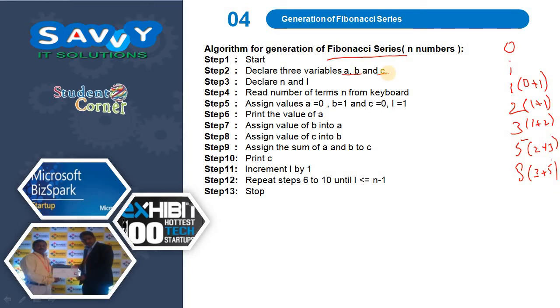For that, we are writing the code. Declare the variables a, b and c, additionally we are taking n and i. Up to 1, 2, 3, 4, 5, 6, 7. I will give n equals 7, then it prints 0 to 8. Read the number of terms n and assign the value of a equals 0, b equals 1, c equals 0 and i equals 1. Print the value of a, print the value of a, assign the value of b to a, assign the value of c to b, assign the sum of a and b to c, print c. Simply I can say that, here we print first 0 and 1. After that, c equals a plus b.